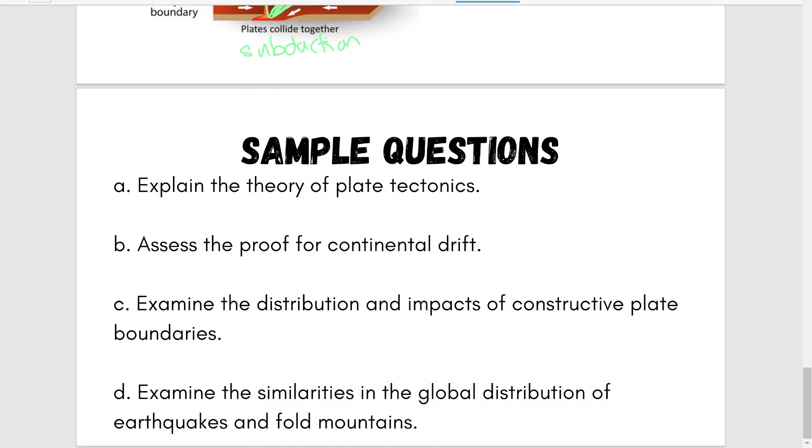Then you bring in your different plate boundaries and your different continents. You look at the different proofs. Assessing the proof of continental drift, you're doing the exact same thing. What are the proofs of plate tectonics? How do we know this has happened? We go back to what we said about the rocks, the glaciers, the fossils, the shapes. Bring everything in together.